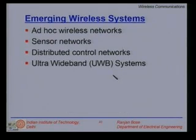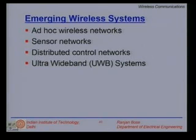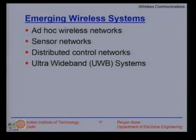There are some emerging wireless systems, fresh from the oven. One of the evolving technologies is ad hoc wireless networks. Another thing being said to be one of the enabling technologies is sensor networks. Sensor networks would be instrumental in predicting massive disasters. For example, the tsunami disaster could have been less devastating if a good sensor network was in place. Earthquakes, forest fires, and floods can be predicted by sensor networks, or at least advanced warning systems can be generated. Another evolving technology is distributed control networks and ultra wide band communication systems.